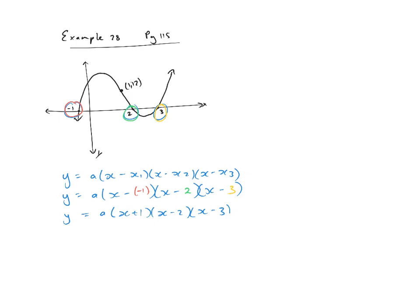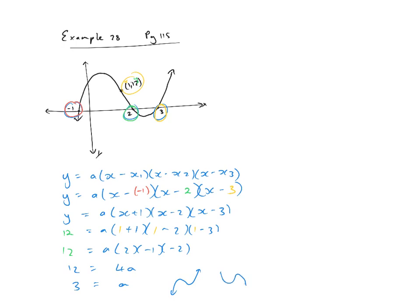We need to substitute the point (1, 12) to find A. So: 12 = A(1 + 1)(1 − 2)(1 − 3) = A(2)(−1)(−2). That gives 12 = 4A, so A = 3. The graph is positive, which means if A is positive it starts down and ends high; if A is negative, it starts high and ends down.